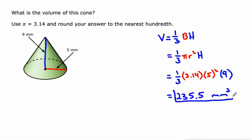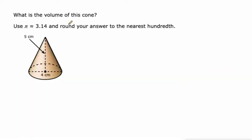The area of the base is in square millimeters — that's the red part — and that 9 is millimeters. So square millimeters times millimeters gives cubic millimeters. IXL puts the units in there for you anyway; we just have to come up with the numbers.